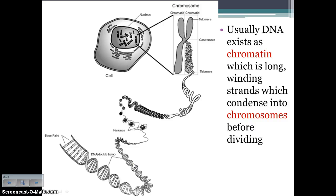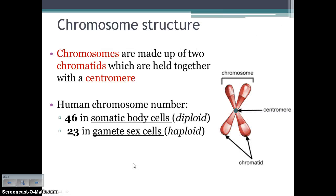DNA condenses into chromosomes before the cell divides, and then they perform a sort of dance, which is what we'll talk about next. Chromosomes — the X structure — are made up of two chromatids held together with a centromere. Not to be confused with centrioles — scientists love to confuse you by making things sound the same. So a chromosome is made up of two sister chromatids, held together by the centromere.